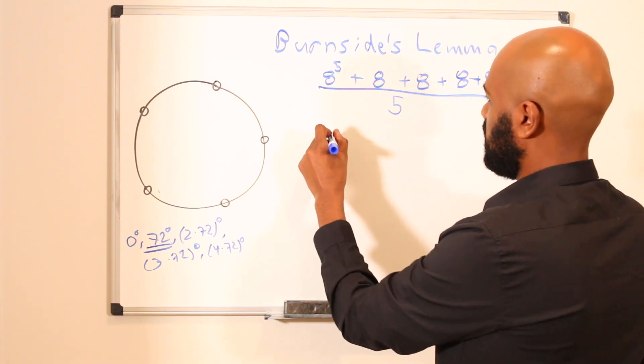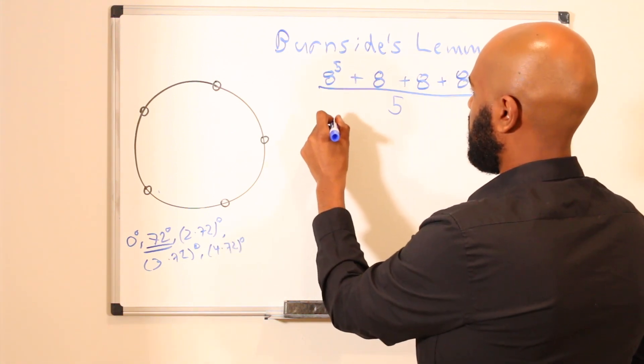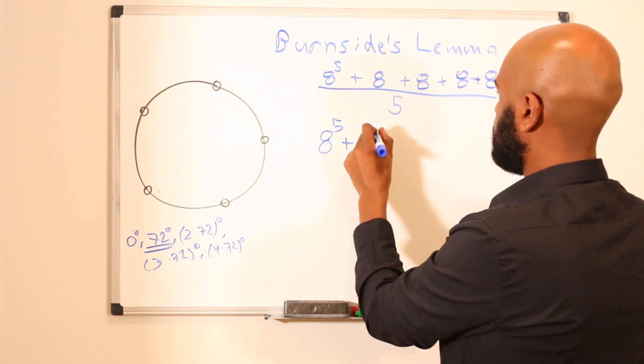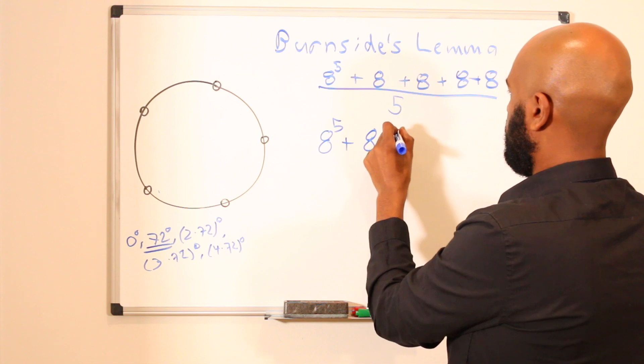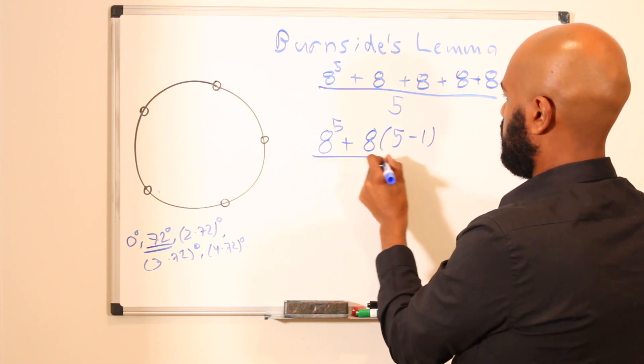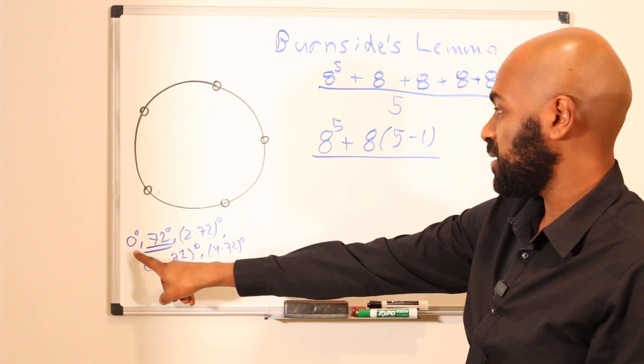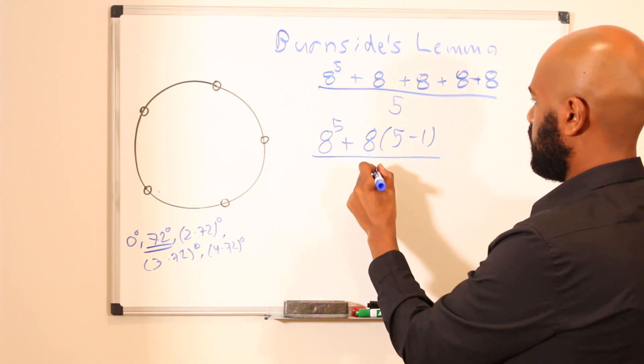So this is total number of colorings, which simplifies to 8 to the 5 plus, and I'll write it this way, this is 8 times 5 minus 1, because we have exactly one rotation does not one of these ones right here, over 5.